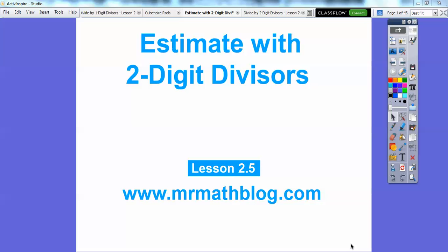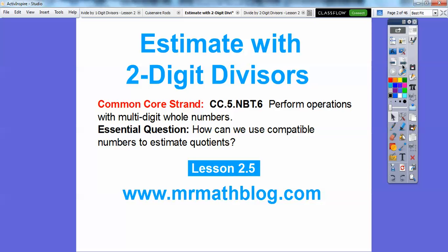Okay guys, this lesson is 2-5. It's an estimate with two-digit divisors. So there's our common core strand. And how can we use compatible numbers to estimate quotients?